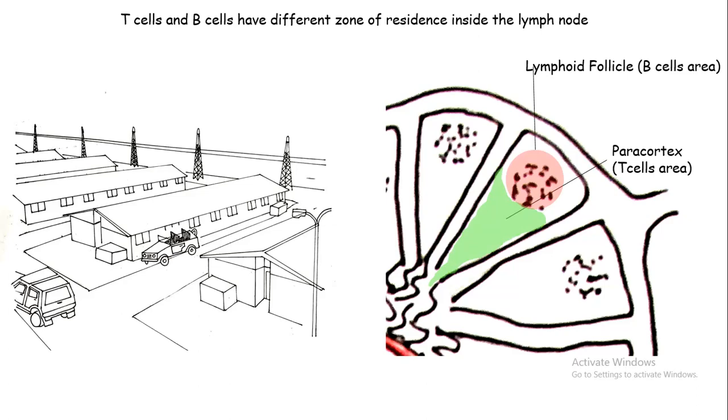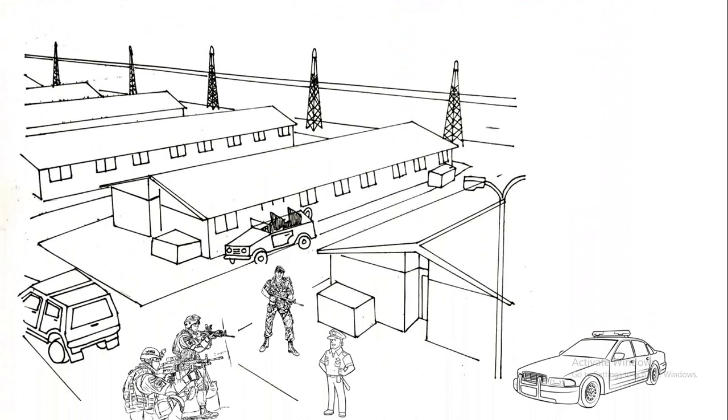The T-cells reside in the paracortex, which could be thought of as specific barracks inside the army camp. Dendritic cells, which are compared to a patrolling police officer, would go to this army base and let the T-cells know about what type of pathogen has invaded. According to that, T-cells would prepare how to fight that infection and they would divide themselves into small platoons.